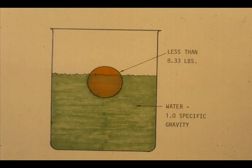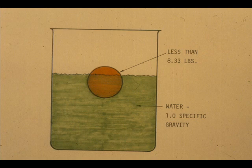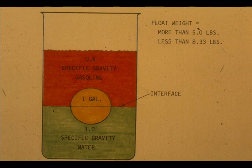Since 1 gallon of water weighs 8.33 pounds, the float must weigh less than 8.33 pounds to float in the water. Therefore, to float in the interface, the float must weigh more than 5 pounds and less than 8.33 pounds.